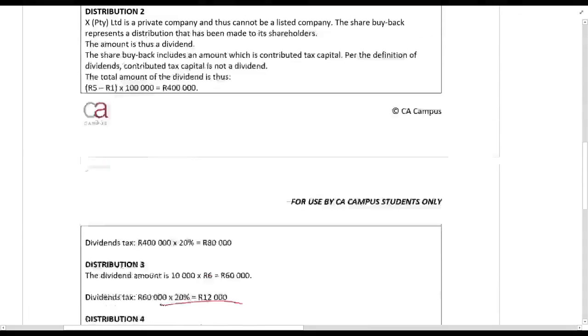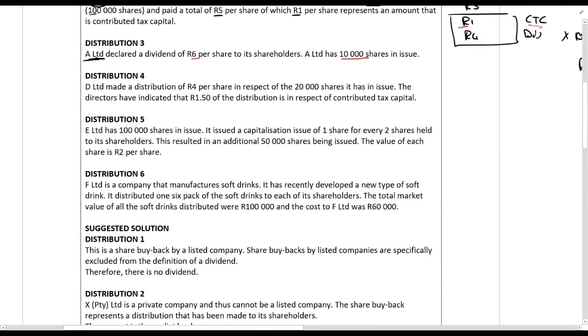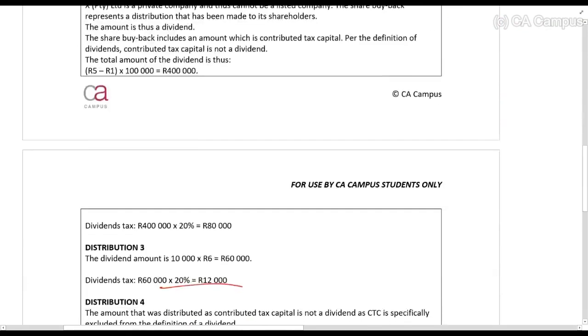Distribution 4: D Ltd made a distribution of 4R per share in respect of its 20,000 shares. The directors have indicated that 1.50 of the distribution is CTC. So if 4R and 1R 50 is CTC, then 2R 50 must be a dividend. The distribution is 4R times 20% for the dividend portion.